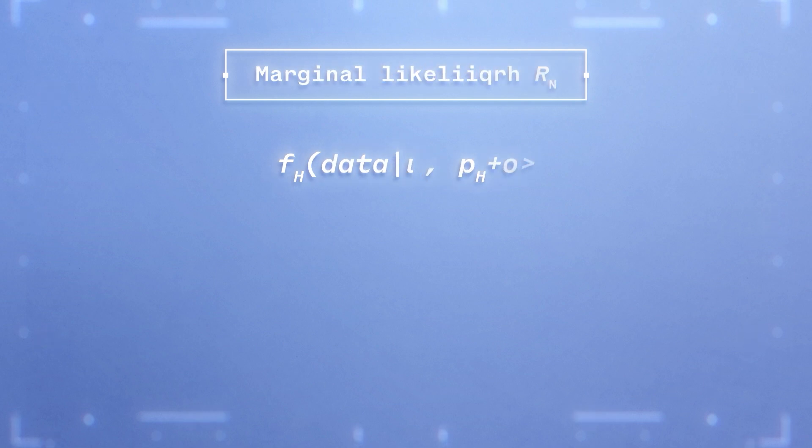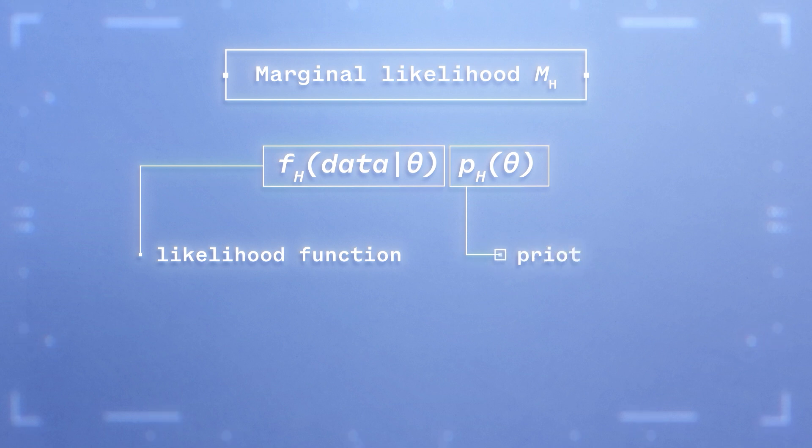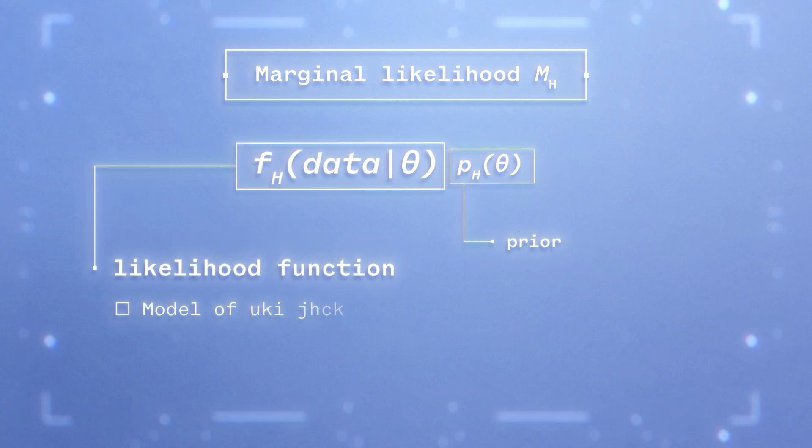The marginal likelihood is the sum of products between two components. The first component is the likelihood function and the second component is the prior. The likelihood function specifies the model we use to describe the data. In other words, it describes the probability of observing some data given the model structure and parameters.